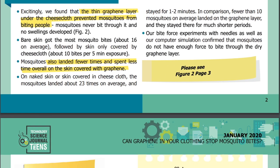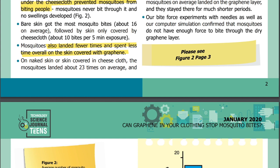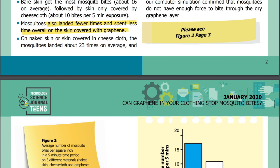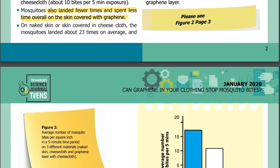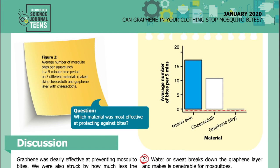Results: Excitingly, we found that the thin graphene layer under the cheesecloth prevented mosquitoes from biting people. Mosquitoes never bit through it, and no swellings developed. Bare skin got the most mosquito bites — about 16 on average — followed by skin only covered by cheesecloth, about 5 bites per 5-minute exposure. Mosquitoes also landed fewer times and spent less time overall on the skin covered with graphene. On naked skin or skin covered in cheesecloth, the mosquitoes landed about 23 times on average and stayed for 1–2 minutes. In comparison, fewer than 10 mosquitoes on average landed on the graphene layer, and they stayed there for much shorter periods. Our bite force experiments with needles, as well as our computer simulation, confirmed that mosquitoes do not have enough force to bite through the dry graphene layer. Figure 2 shows the average number of mosquito bites per square inch in a 5-minute time period on three different materials: naked skin, cheesecloth, and graphene layer on cheesecloth.